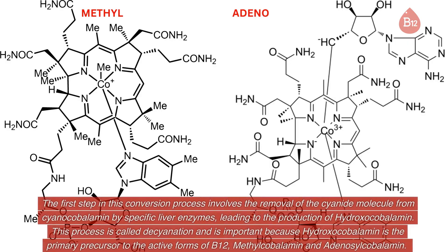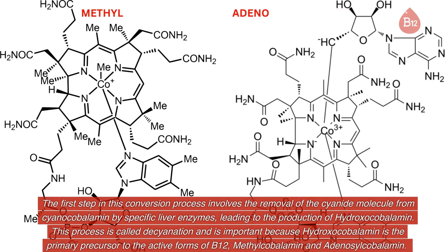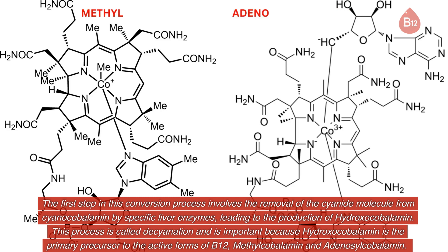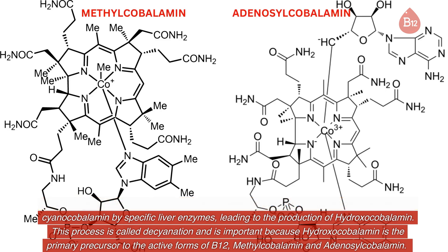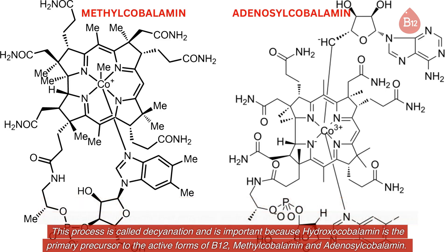The first step in this conversion process involves the removal of the cyanide molecule from cyanocobalamin by specific liver enzymes, leading to the production of hydroxocobalamin. This process is called decyanation, and is important because hydroxocobalamin is the primary precursor to the active forms of B12 — methylcobalamin and adenosylcobalamin.